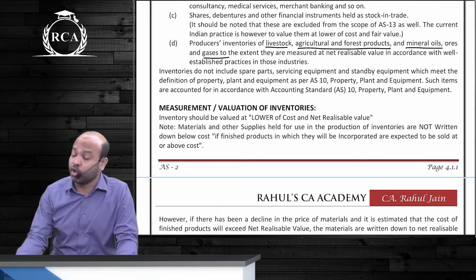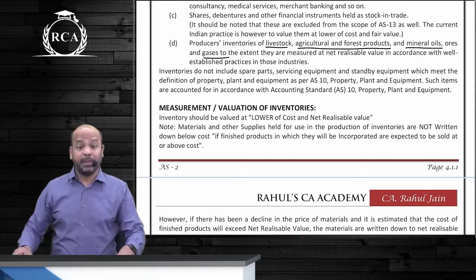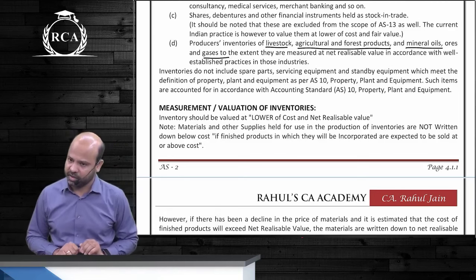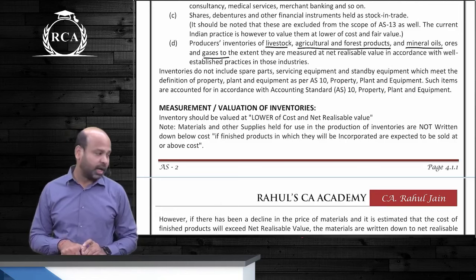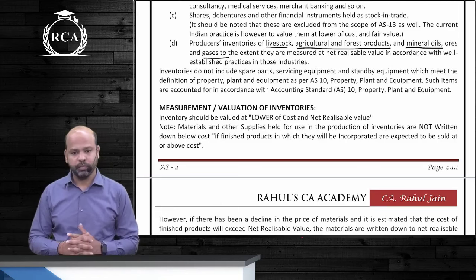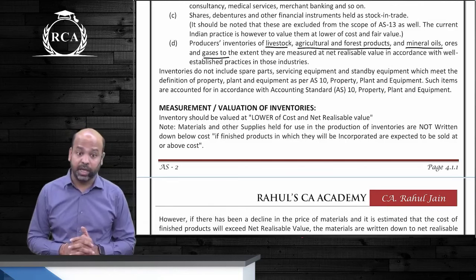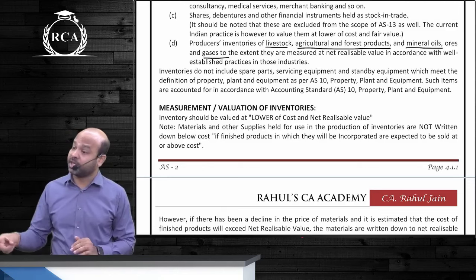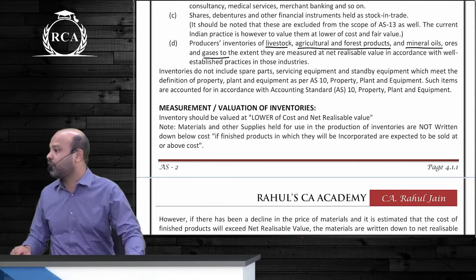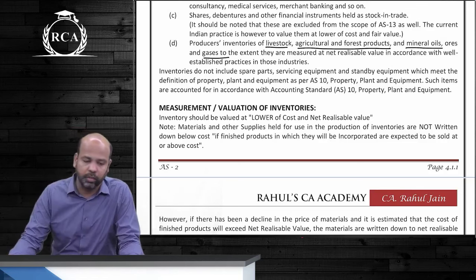You should know how to compute NRV. NRV of finished product is the selling price of the finished product minus selling expenses required to sell the product. NRV of work in progress is the selling price of the finished product minus selling expenses minus additional expenses yet to be incurred to manufacture the product, since work in progress still needs to be converted into finished goods.